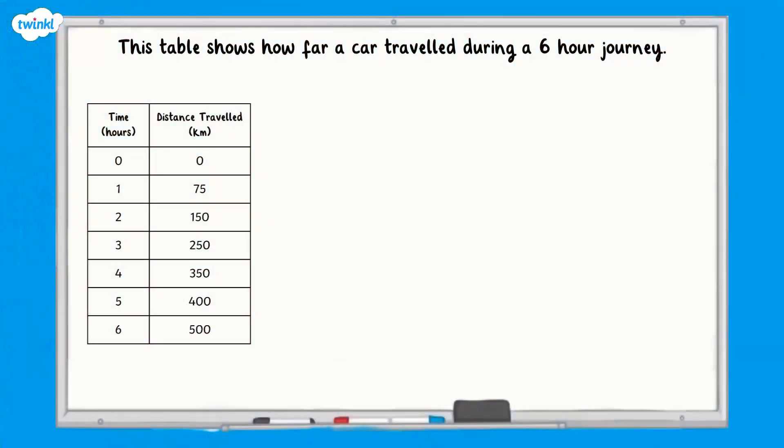We are going to create a line graph to display the data in this table. It shows the distance a car travels over a 6 hour journey. If you want to, you can create the graph on squared paper at the same time as I do it on the screen. You can pause if you need more time for any of the steps.